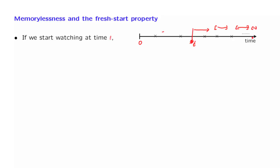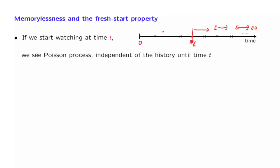Second, the original process was Poisson, so different intervals are independent. Whatever happens in this interval is independent from whatever happens in that interval. But that interval corresponds to the future of the process. And therefore, the future of the process — what you get to see — is independent from the past history. And so the conclusion is that the process that you get to see is a Poisson process which is independent of the history until the time that you started watching. And we say, therefore, that what you see is a fresh starting process.